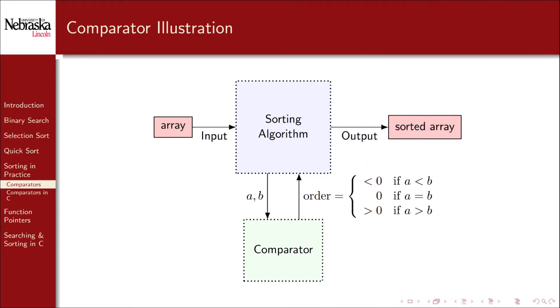This makes it so that we don't have to rewrite the sorting algorithm over and over again. We only need to make a new comparator function for each type of data or each criteria that we want to search and sort by.